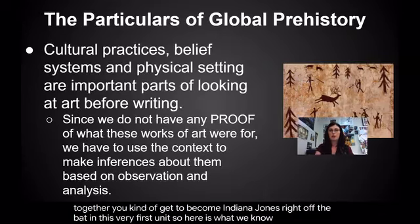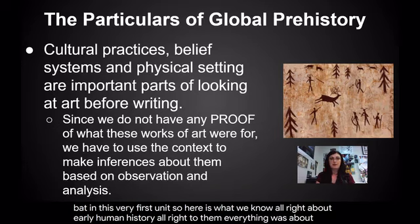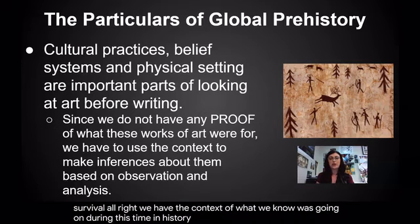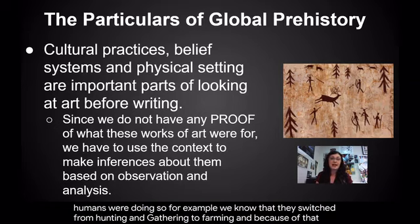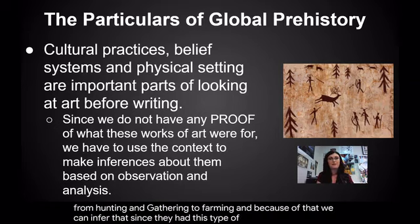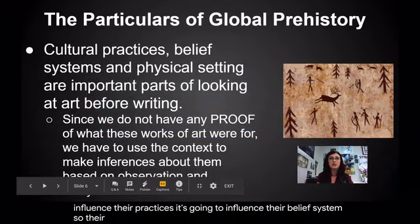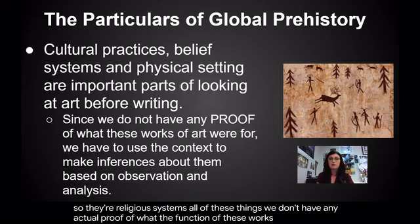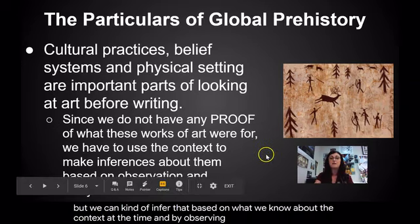Here is what we know about early human history: to them, everything was about survival. We have the context of what we know was going on during this time — the climate, what humans were doing. For example, we know that they switched from hunting and gathering to farming, and because of that, we can infer that this type of lifestyle influenced their practices and their belief systems, including their religious systems. We don't have actual proof of what the function of these works of art were for, but we can infer that based on what we know about the context at the time and by observing these works of art.